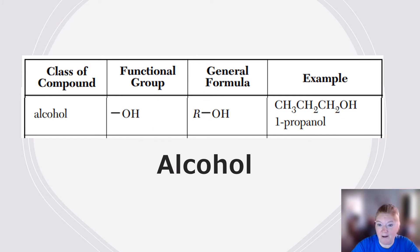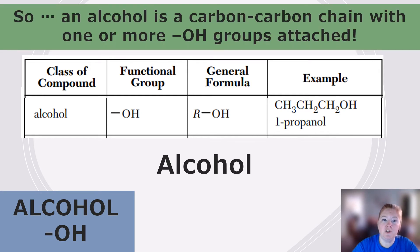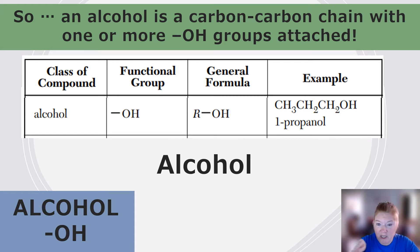Next on the list is alcohol. Alcohol's functional group is -OH. So this is a carbon chain with one or more OH groups attached. Notice it has an address, which means it does not have to be on the end carbon — it could be anywhere, and the address tells us where.